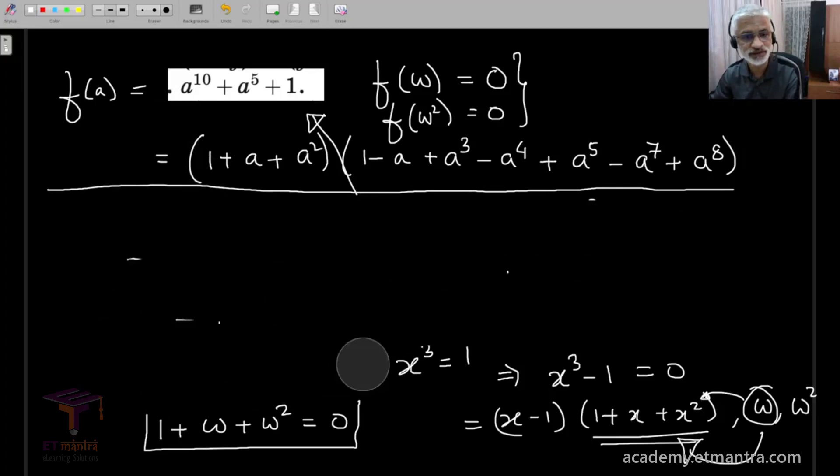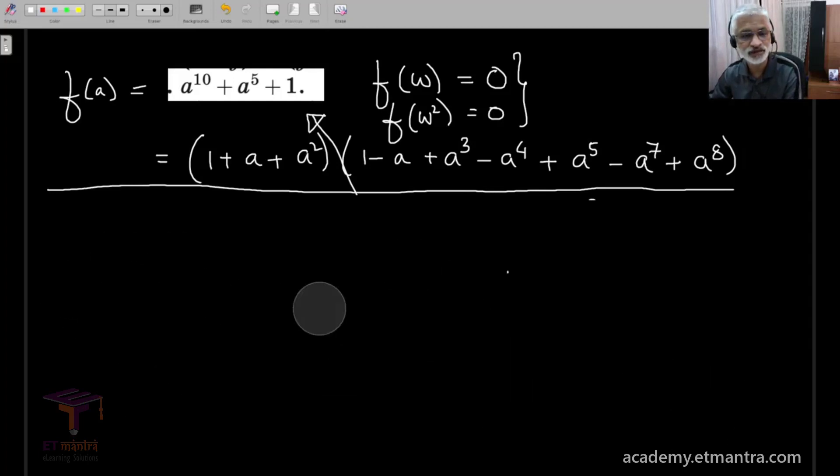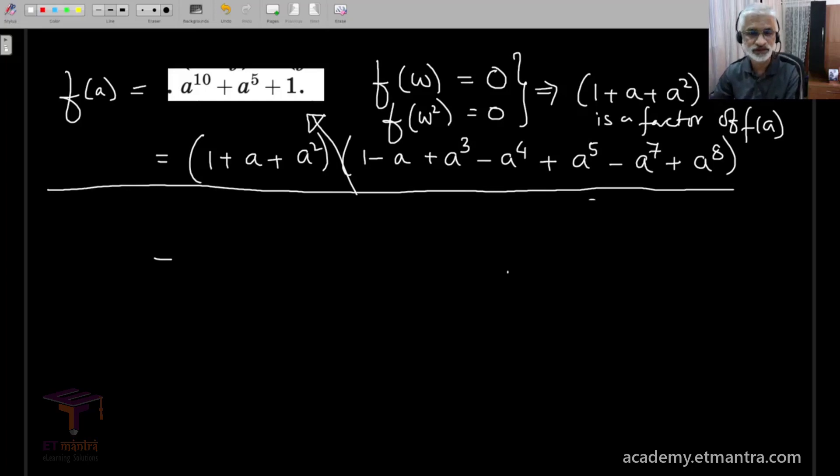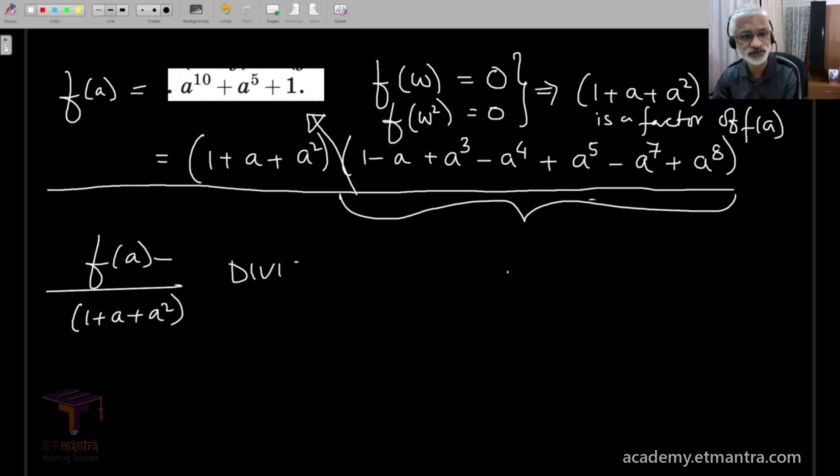if omega and omega square satisfy this equation, it simply means that 1 plus a plus a square is a factor of this polynomial, factor of f of a. Now, if you've gotten hold of one factor, then this difficult factor is simply f of a divided by 1 plus a plus a square, which is simply division, so we are well versed in division. And that way, we can get both the factors.